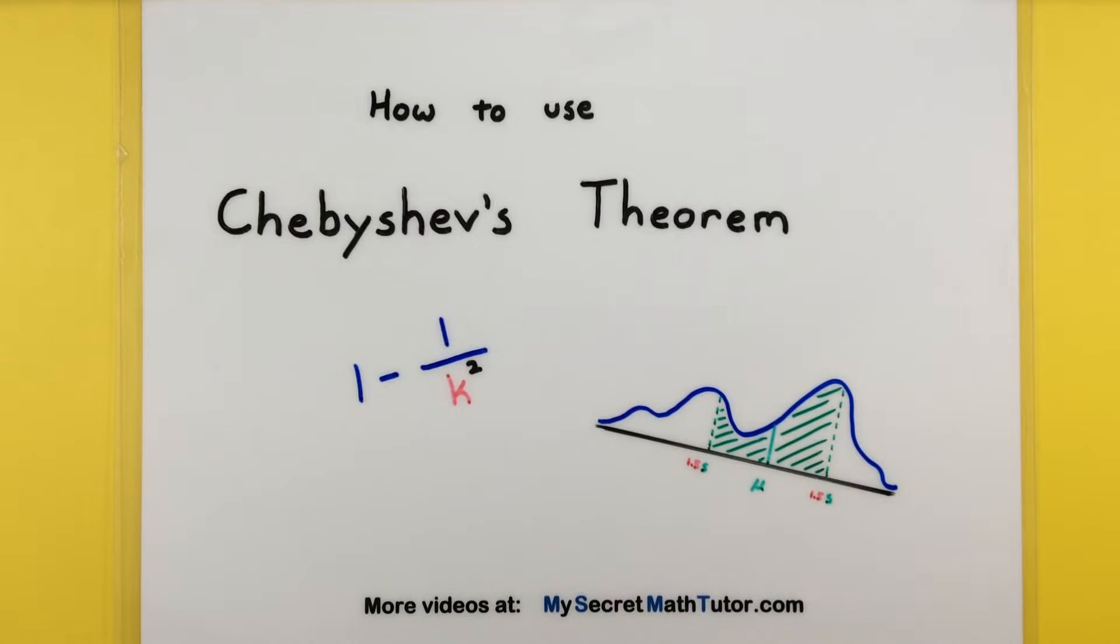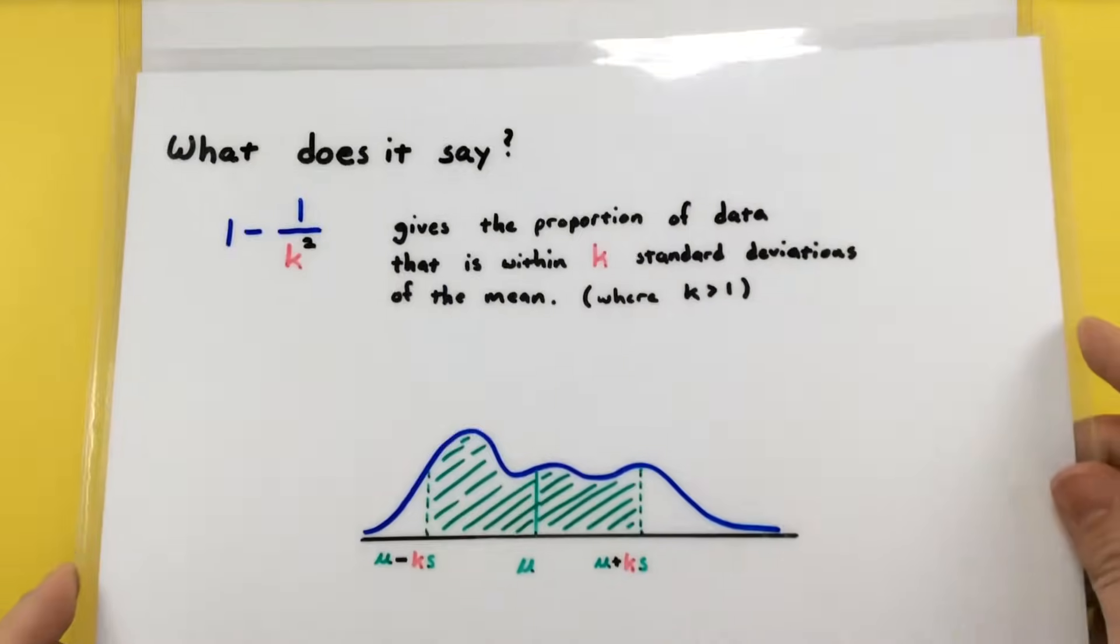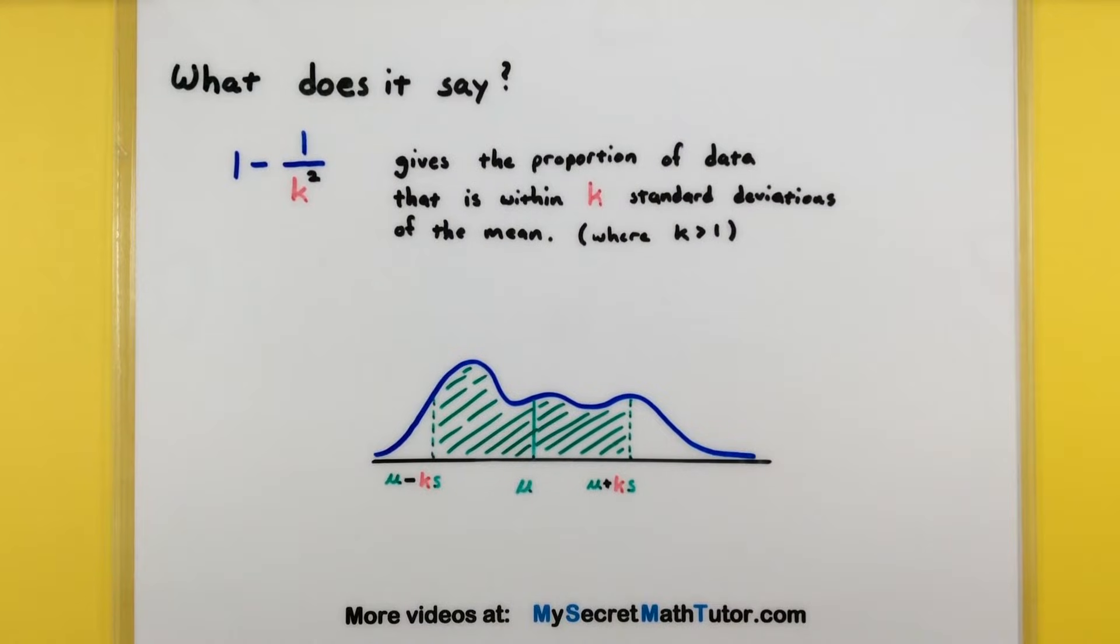Hello and welcome to My Secret Math Tutor. In this video we're going to cover how to use Chebyshev's theorem. Now this is a really interesting theorem but essentially what it says is it gives you the proportion of data that is within k standard deviations of the mean.